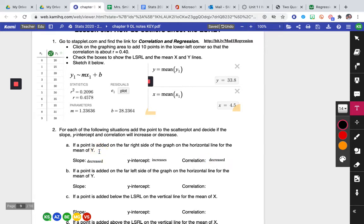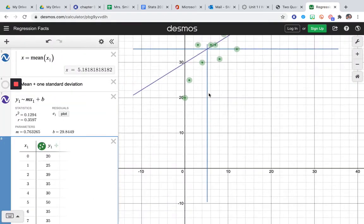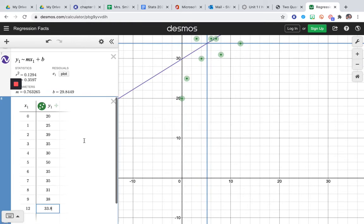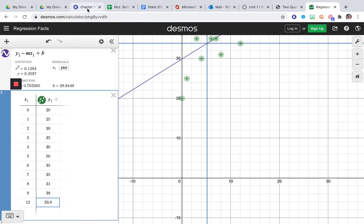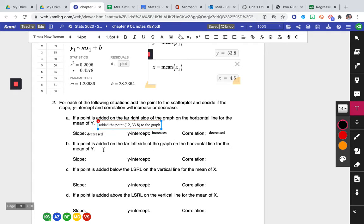And I'm going to tell myself I added the point, and I forgot what the point was just that fast. Oops. 12, 33.8 to the graph. All right, so basically I'm just trying to figure out how will my graph change as I add different points.